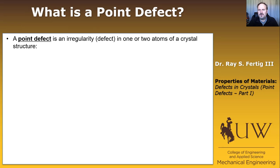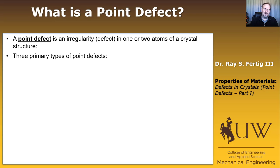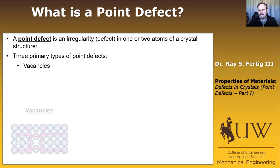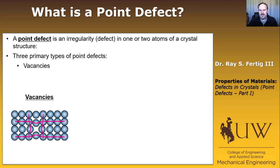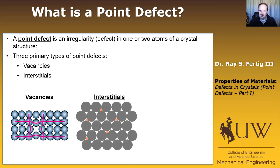A point defect is an irregularity in one or two atoms in the crystal structure. There are three primary types of point defects. The first are called vacancies — just an atom that's missing from its spot. The second are called interstitials: atoms that are crammed into spaces not where atoms in the lattice normally reside.